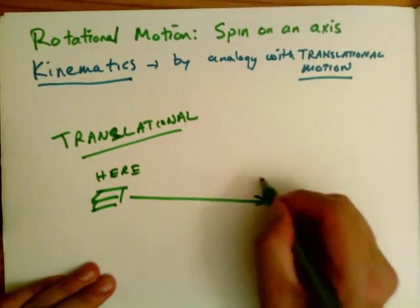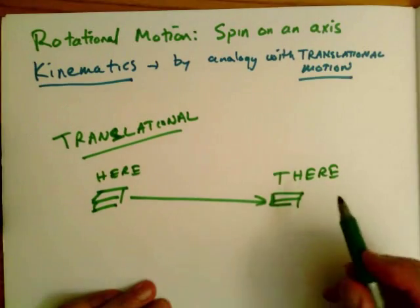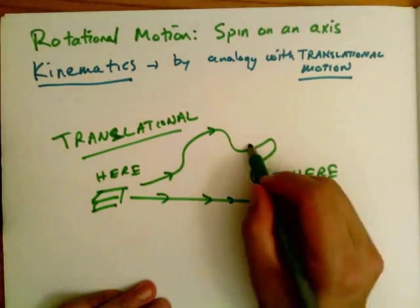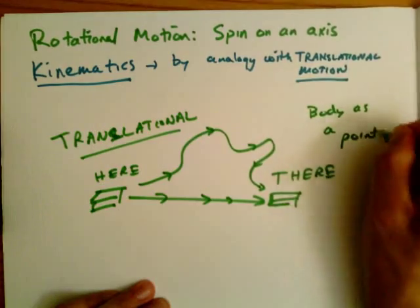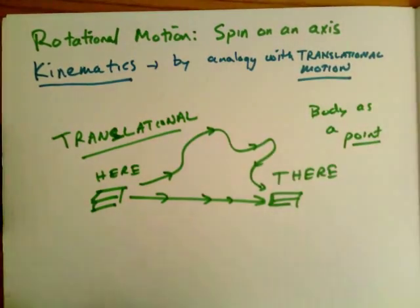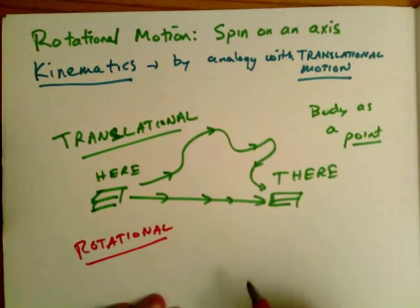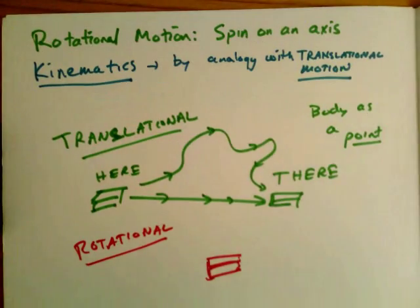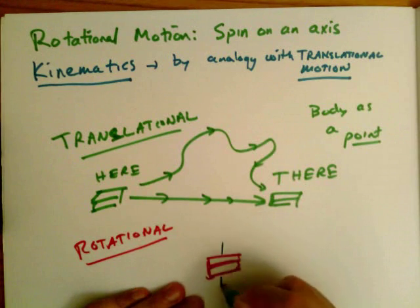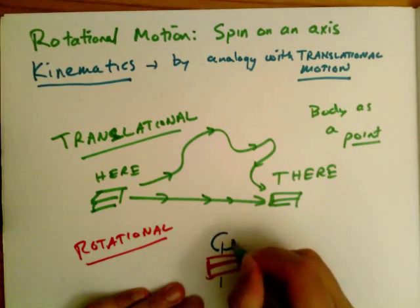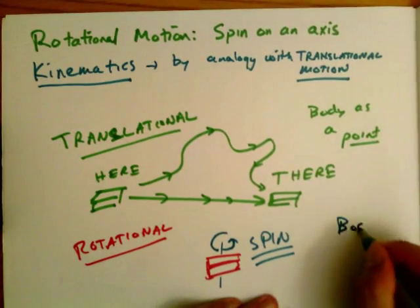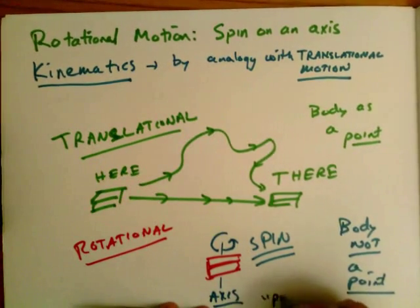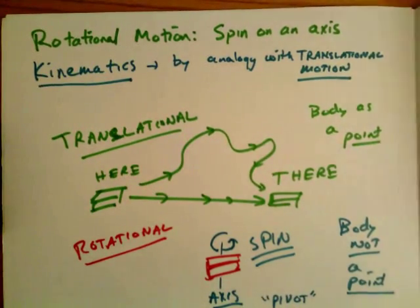For example, I could have a block that moves from here to there — that corresponds to translational motion, and it's translational no matter what path I take. We treat the body as a point and ask what is the path of that point. In contrast, rotational motion is about the spinning motion of the block around an axis of rotation, and for that we have to treat the body as something other than a point — a point is not adequate to describe rotation.